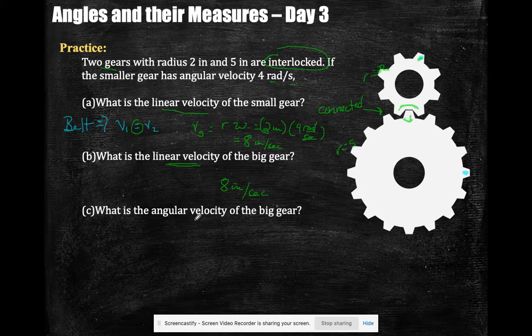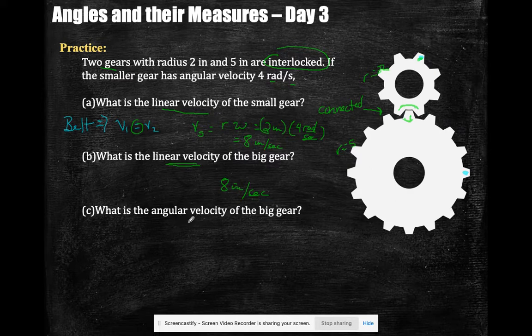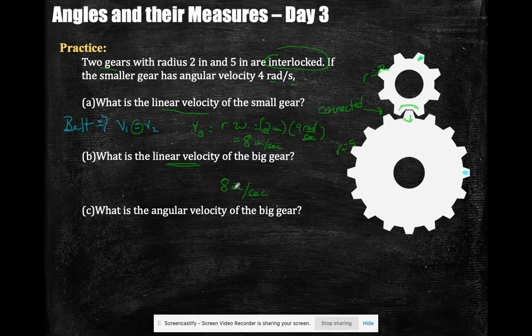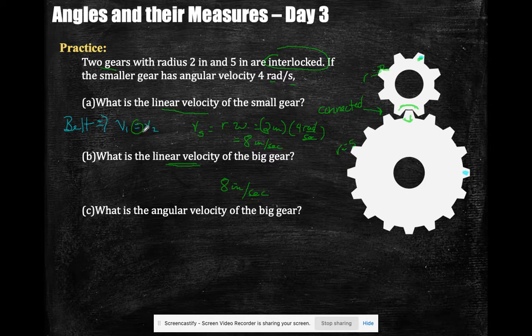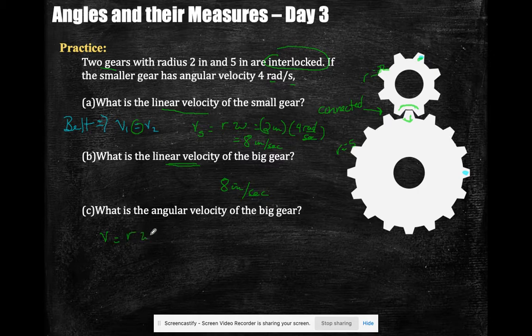What is the angular velocity of the big gear? Angular velocity is different. Think about this: this guy's got to spin a lot faster than the big guy. The angular velocity of the small one is 4 radians per second, so I expect a smaller number for the big guy. I'm going to take my linear velocity formula, which is radius times omega, and solve for omega.